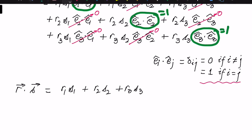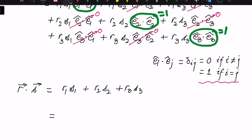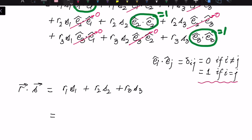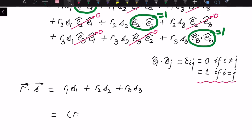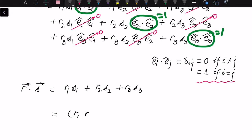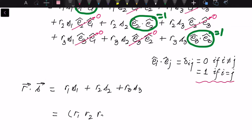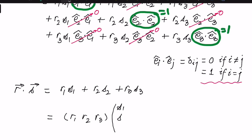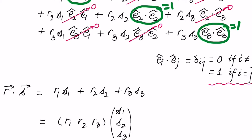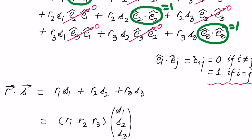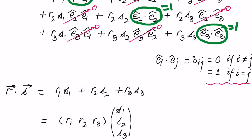This entire expression simplifies to the familiar result: the dot product r · s equals R1·S1 + R2·S2 + R3·S3. We can also write this as the product of a row vector and a column vector — multiplying row by column gives us this product.